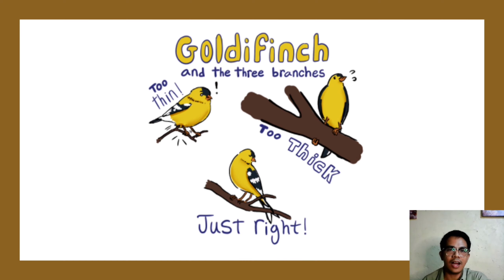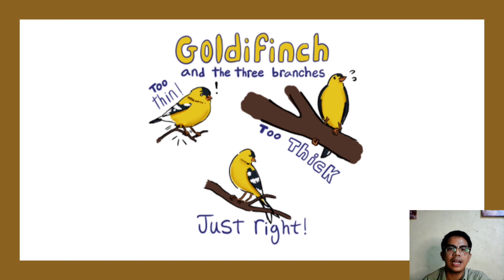To better understand niche, here is an example from Sylvia Freeman: 'Goldie Pinch and the Three Branches' — a tale of one bird struggling to find its niche in the big, bad forest. In this analogy, the Goldie Pinch is the species and the branches are the niches. One branch is too thin, one is too thick, and the other one is just right. Organisms have evolved over time to fit into their niches.